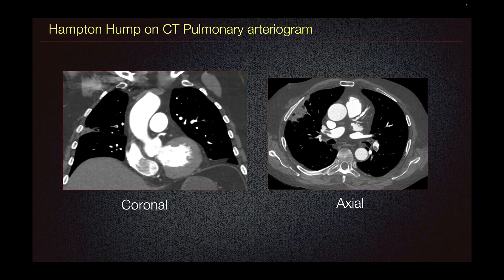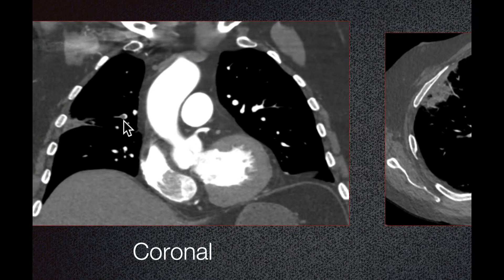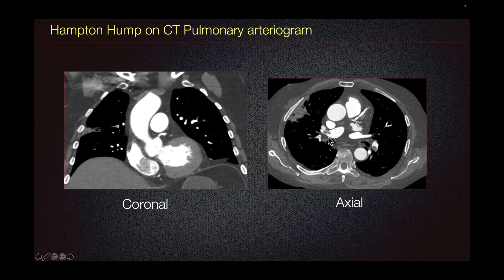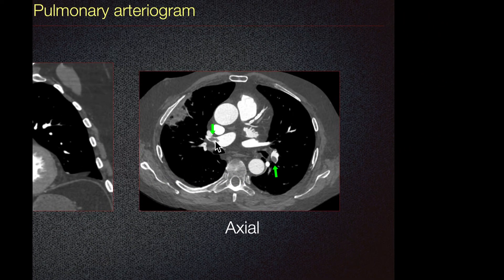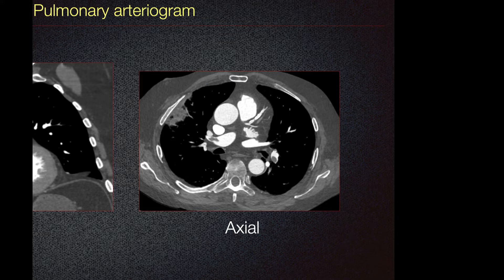Hampton's Hump on CT Pulmonary Arteriogram. In our coronal reformat, we can see a pleural-based opacity in the right mid-lung. We can see a filling defect within the pulmonary artery consistent with pulmonary embolism. On our axial imaging, we can see filling defects in both the right main pulmonary artery and the left lower lobe pulmonary arteries. Just peripherally, we can see this pleural-based rounded opacification consistent with pulmonary infarct associated with pulmonary embolism.